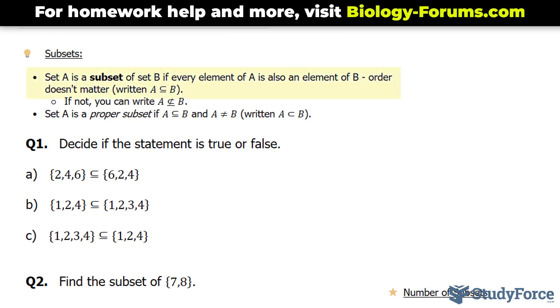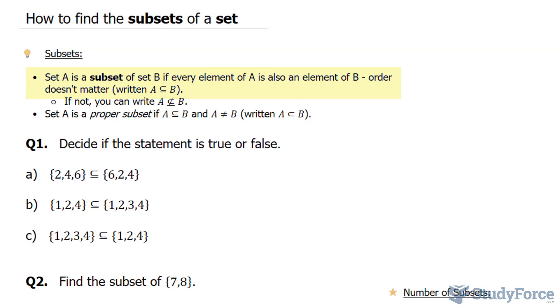Let's say we have two sets, set A and set B. Set A is a subset of set B if every element in set A is also an element in set B. Order doesn't matter. And this relationship is symbolized with this symbol.